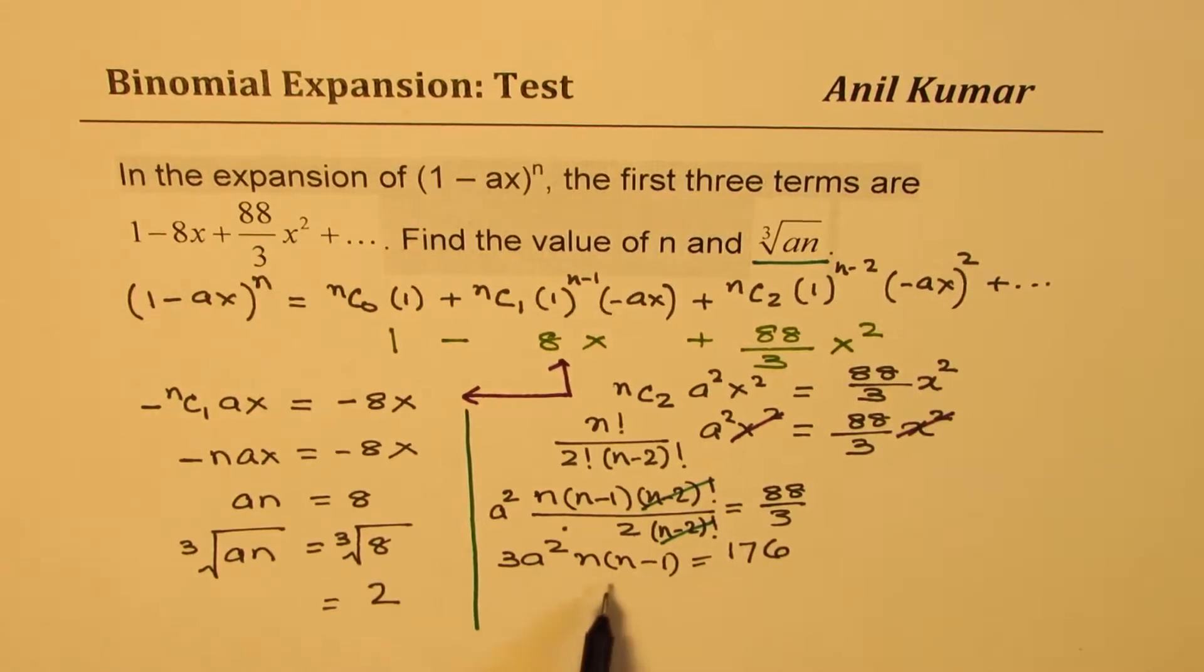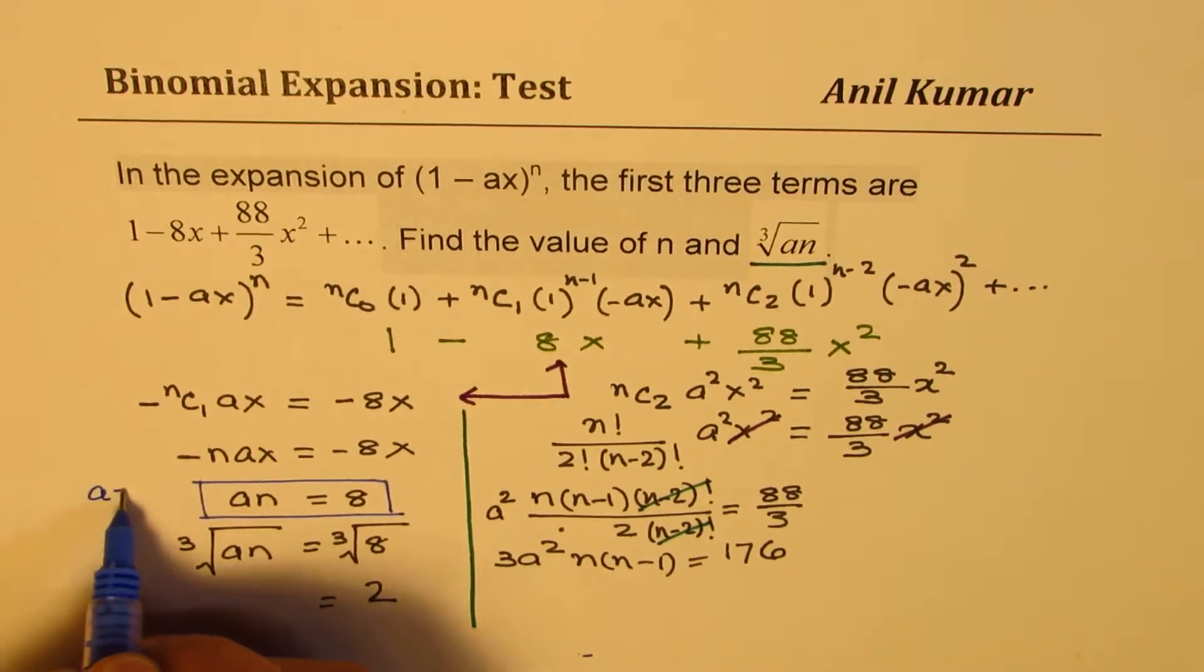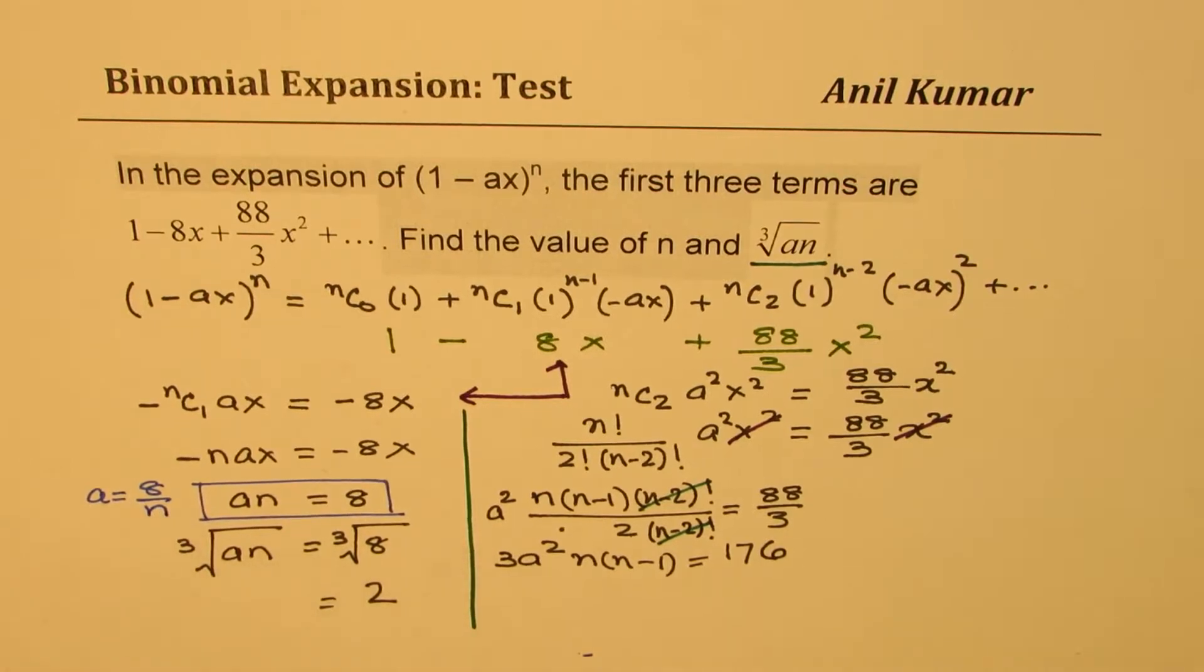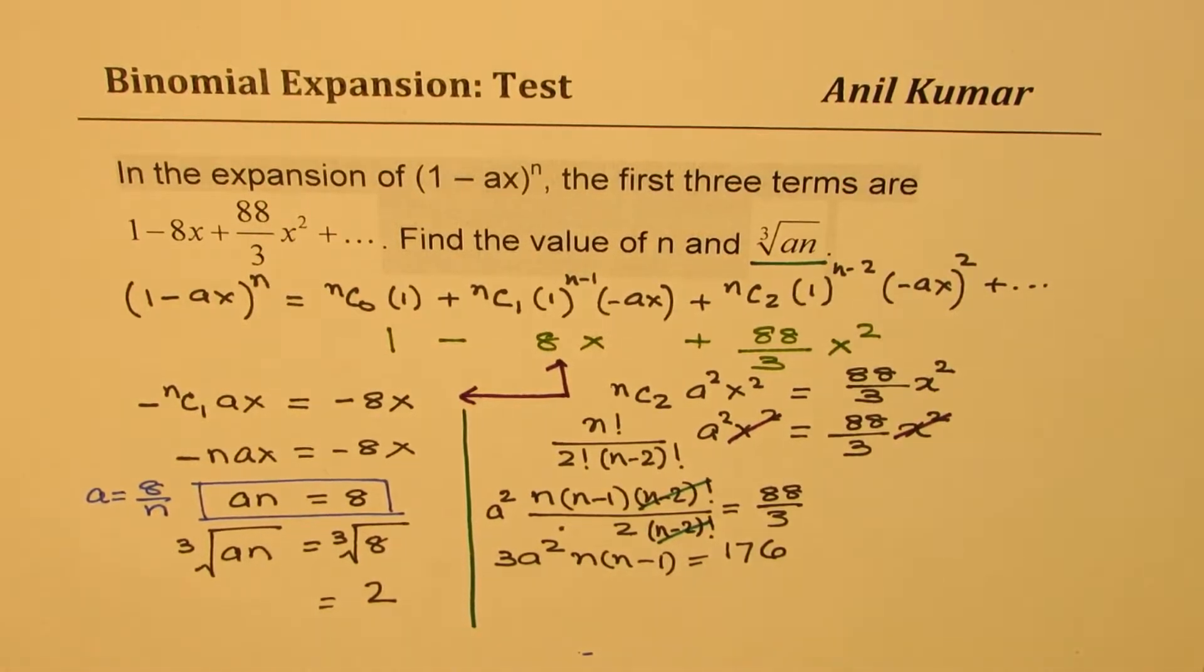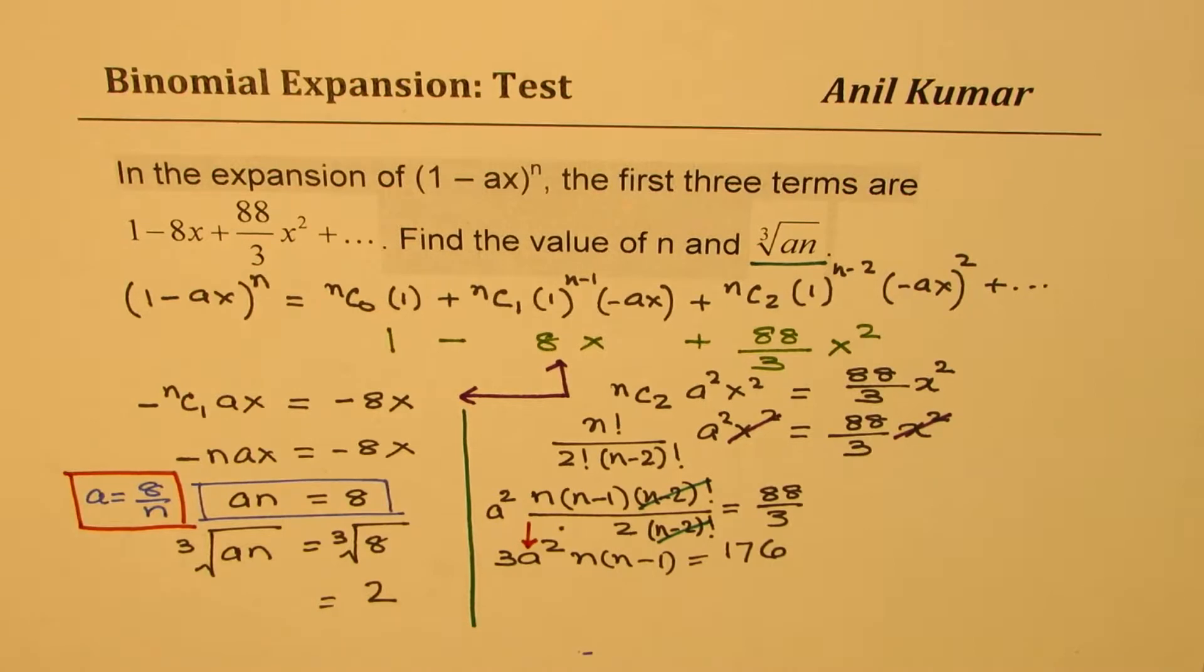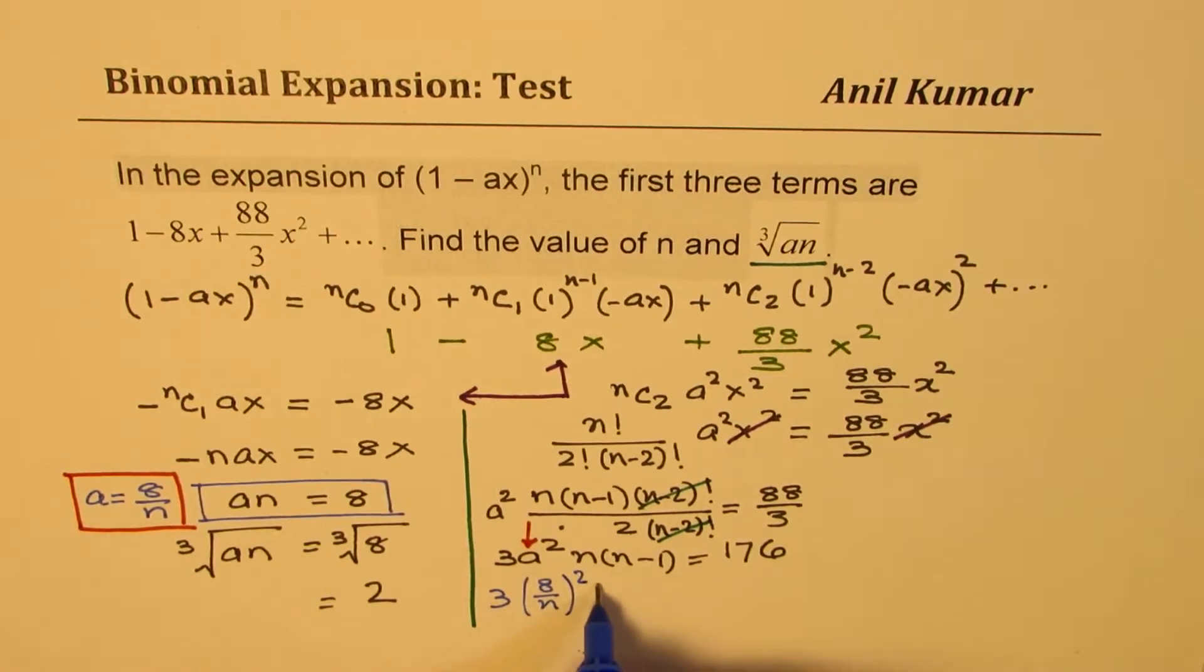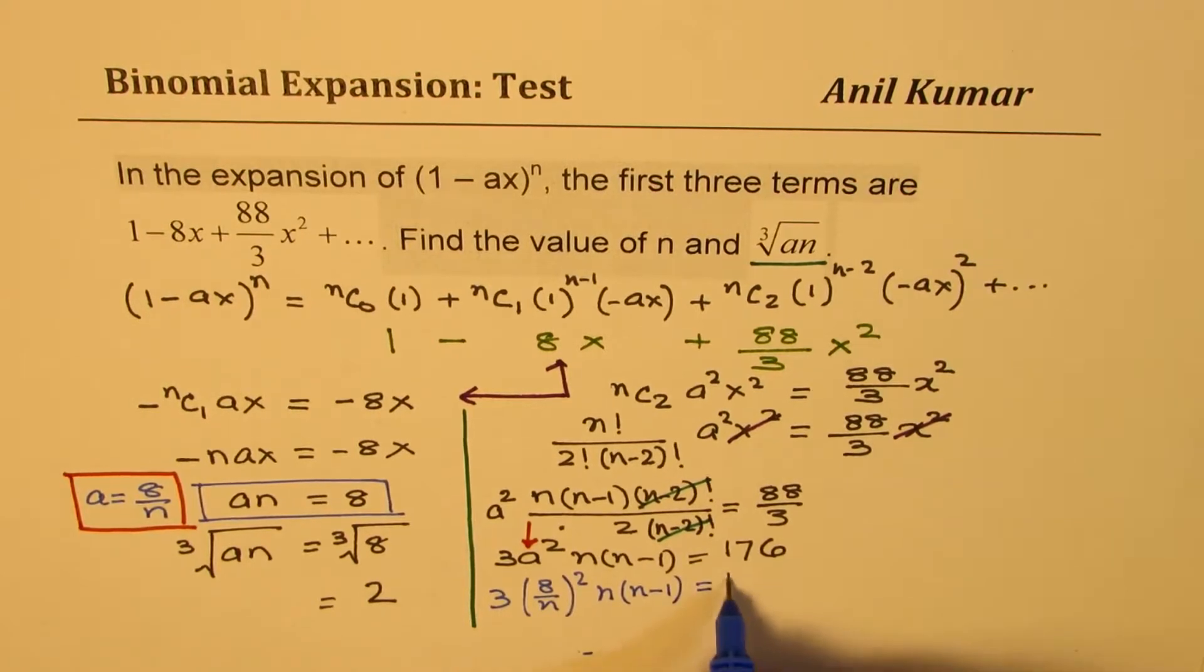Now we need to find the value of n. We know that A could be written as 8/n. From the equation An = 8, I could write A = 8/n. If I substitute this value, A = 8/n over here, I can find the value of n. So we get 3 × (8/n)² × n(n-1) = 176.